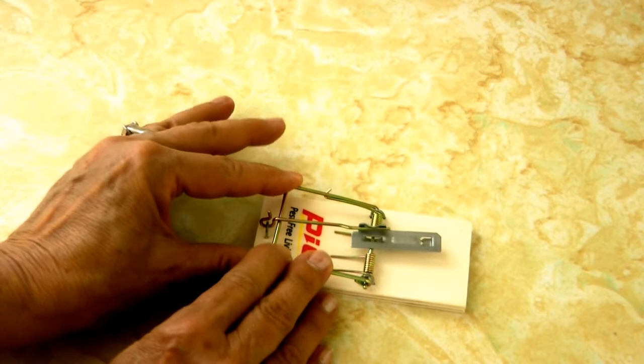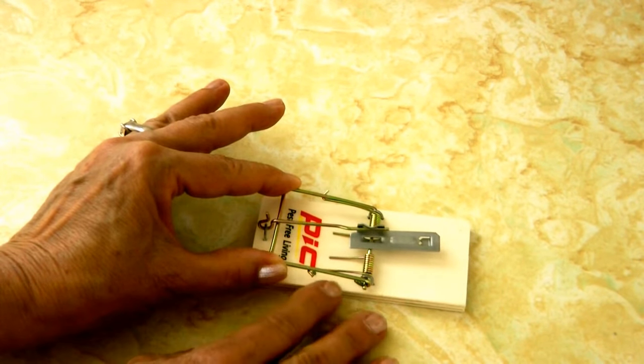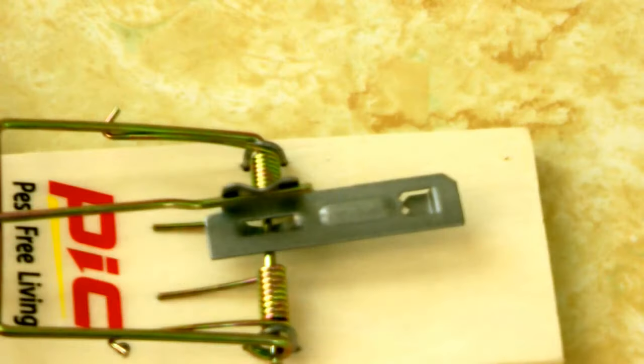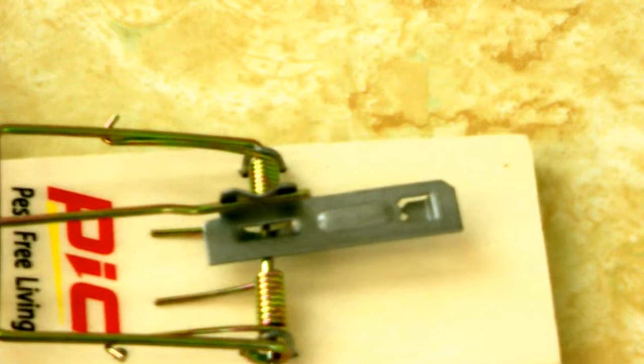The bait goes on the end of the silver tab. You want to be very careful about releasing it so you don't snap your fingers because they're very powerful. You can see from the side that the set pin goes in a little notch on the bait mechanism.